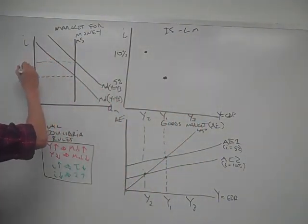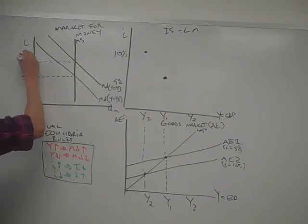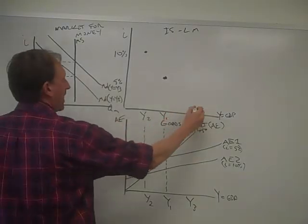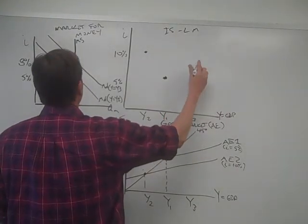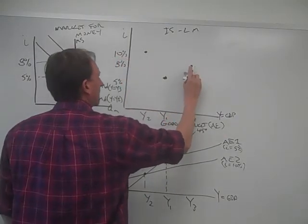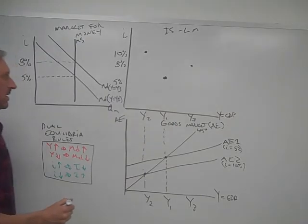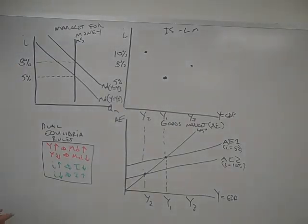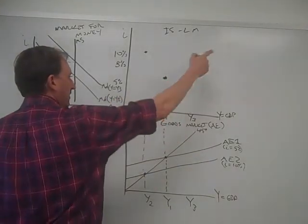So then we get an interest rate that's higher. Let's call that 8%. So if at Y3 we have 8%. So there's our two points for LM. So now we're starting to see the upward slope develop.